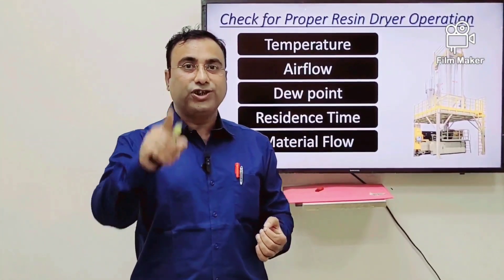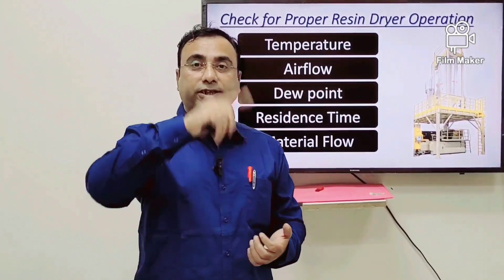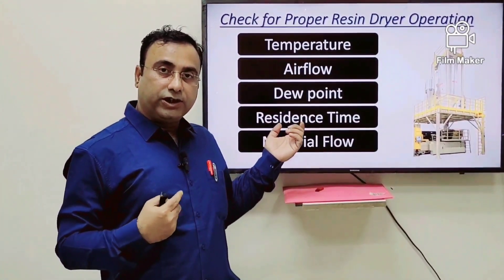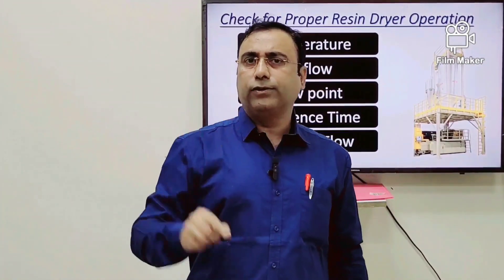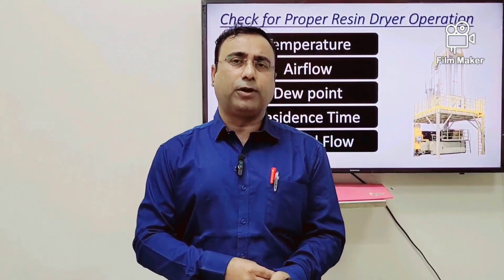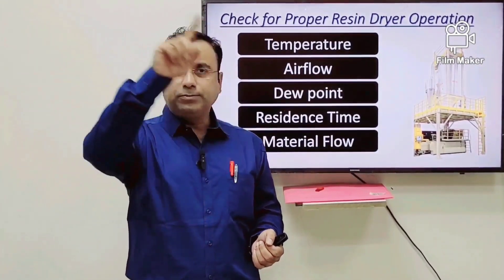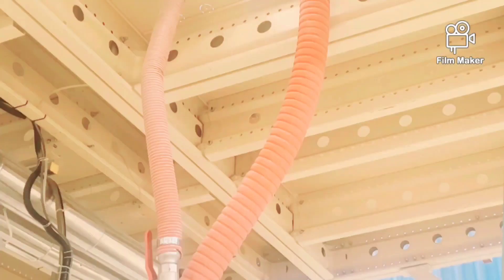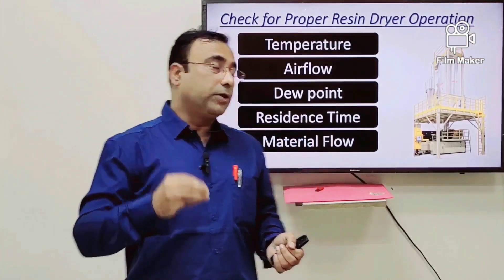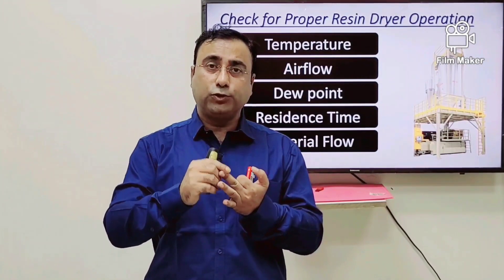I always advise my team: if there is a breakdown of more than half an hour, switch off the dryer. Running it continuously may burn the material or cause temperature differences in the material. Regarding material flow — from the raw material storage to the dryer hopper and then to the machine barrel — if this flow is restricted, that portion gets more heated and material enters the barrel slowly, causing temperature variation in the material.